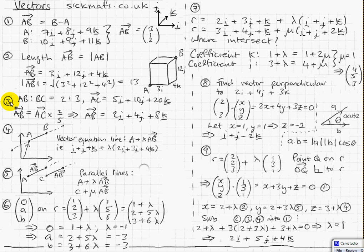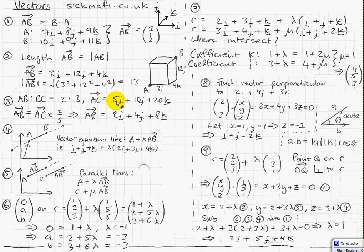Example 3: splitting a vector in the ratio 2 to 3. This is GCSE-level ratios. All you're going to do is split the line into 5 parts and put 2 parts one way and 3 parts the other way. If 2 parts belongs to A to B, then the vector A to B is just 2 fifths of the vector A to C. So 2 fifths of 5 is 2, 2 fifths of 10 is 4, and dividing by 5 and multiplying by 2 gives 8. So that's the vector A to B.